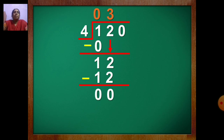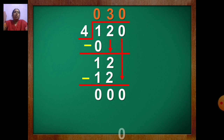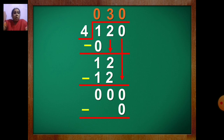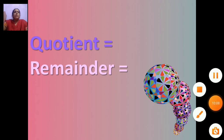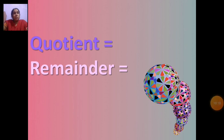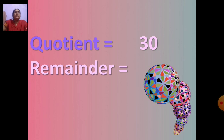Now bring the third number down — that is 0. In table of 4, when you get 0: 4 zeros are 0. Write 0 up, 0 down. Draw the line, put the sign of minus. 0 minus 0 is 0. Now what is the quotient? 30. And remainder? 0.